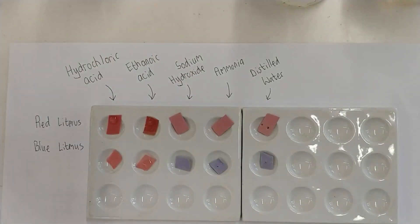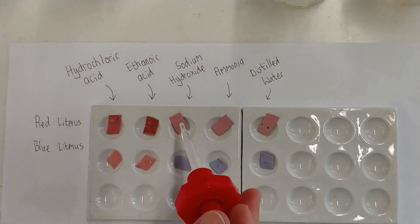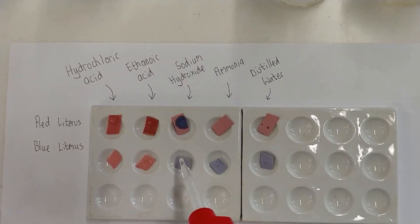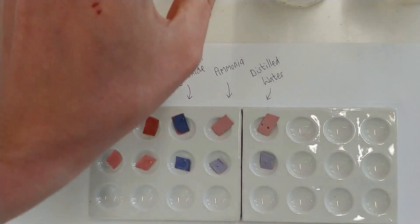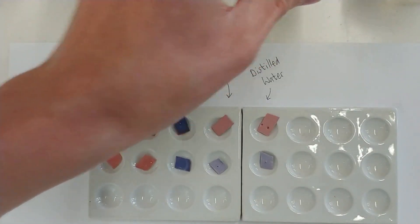Next, sodium hydroxide, another dilute solution. This time we know it's an alkali, so when we drop it on the red litmus, it changes the red litmus blue, and it changes the blue litmus. No, it doesn't change. It remains blue.